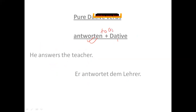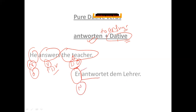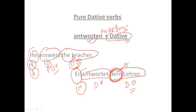Next is 'antworten,' meaning 'to answer.' It always takes a dative object. For example, 'he answers the teacher': 'er' is nominative, 'antwortet' is the verb (pure dative verb), and 'dem Lehrer' is the dative object. The article 'dem' is used here because it is dative — we will discuss articles in detail in upcoming lessons.